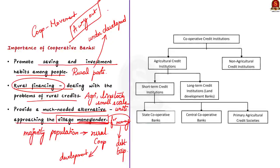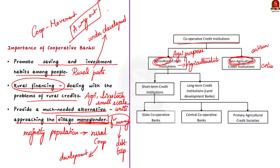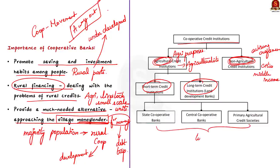Agricultural credit institutions are cooperative societies formed to provide credit at cheaper rates to agriculturalists in rural areas. Non-agricultural credit institutions refer to credit societies formed in cities, mostly to provide short-term credit to artisans, craftsmen, small traders, and middle-income groups such as office employees. Under agricultural credit institutions, there are short-term and long-term credit institutions. Short-term credit institutions have a three-tier federal structure: at the apex level, there is a state cooperative bank in each state, usually situated in the state capital, which controls, coordinates, and finances all cooperative banks in the state.